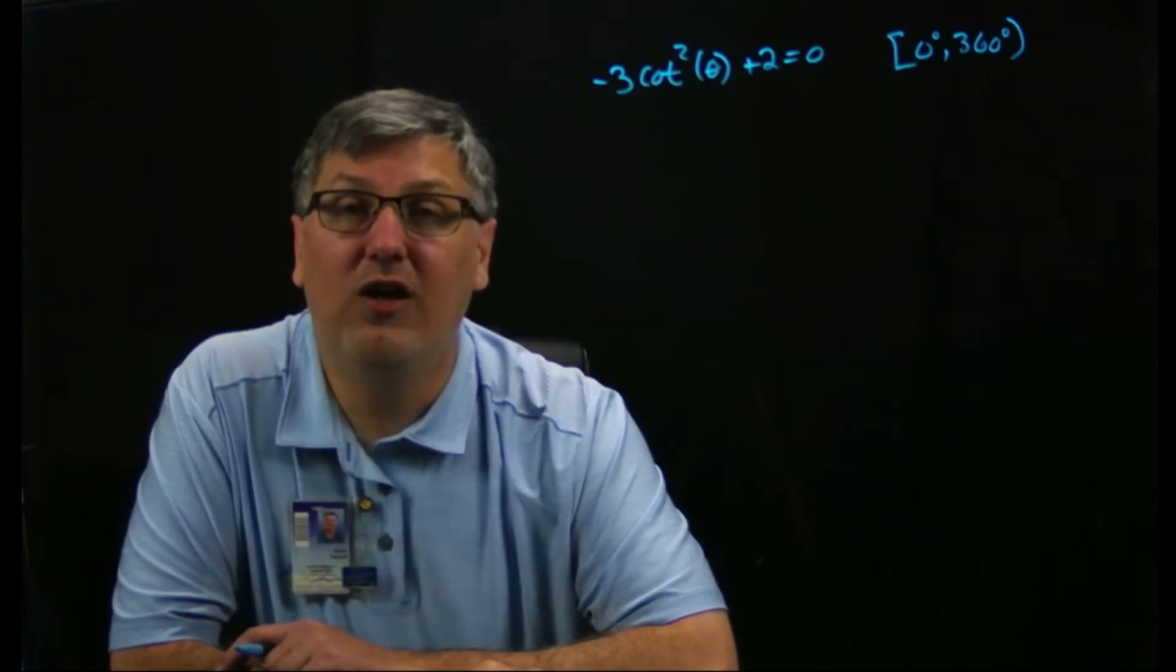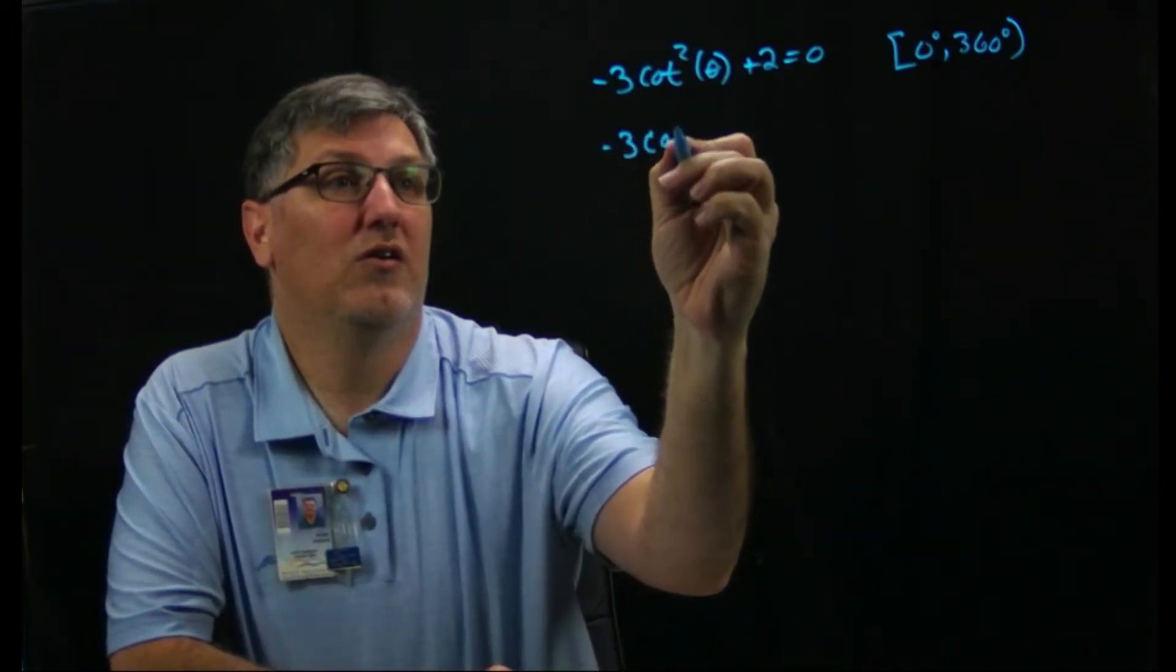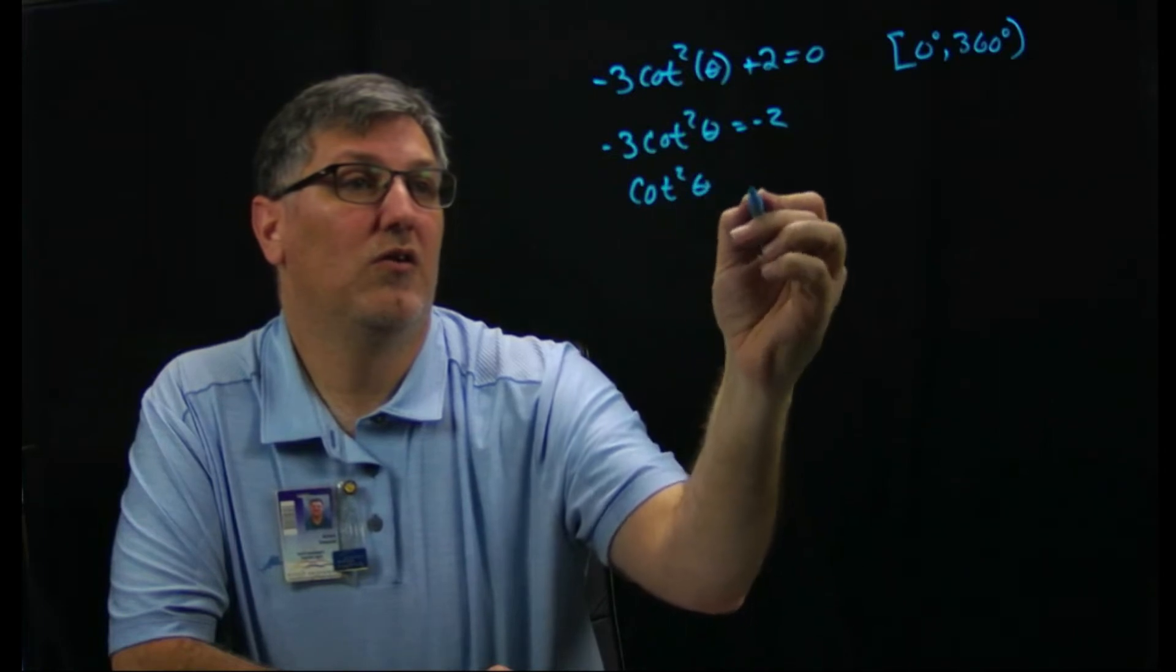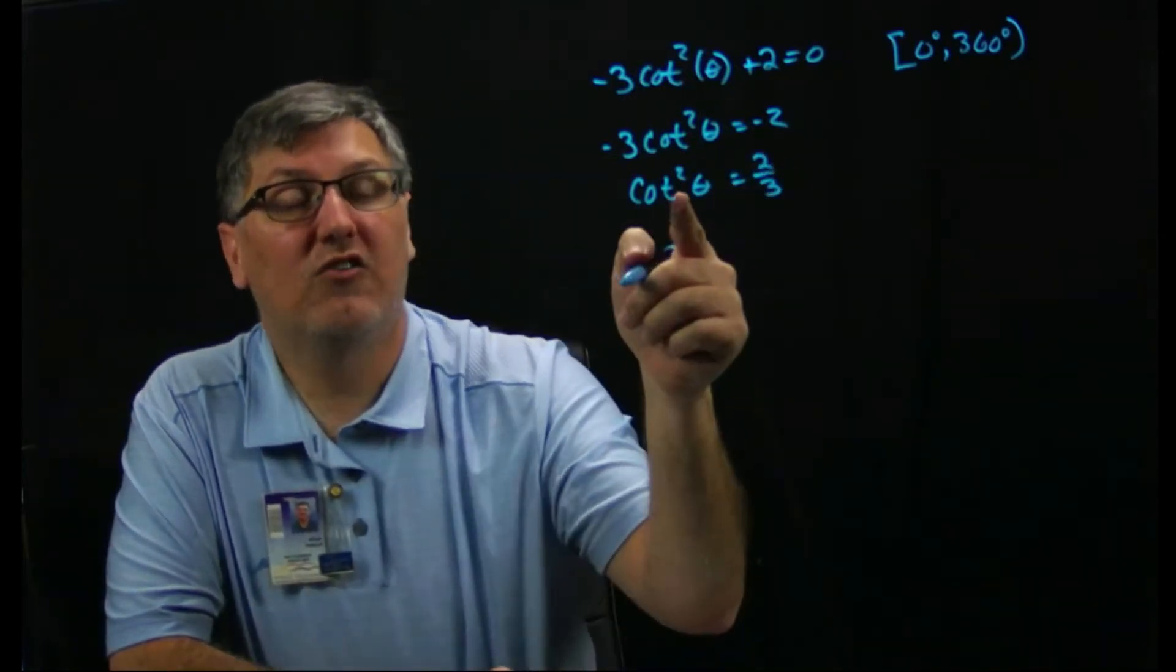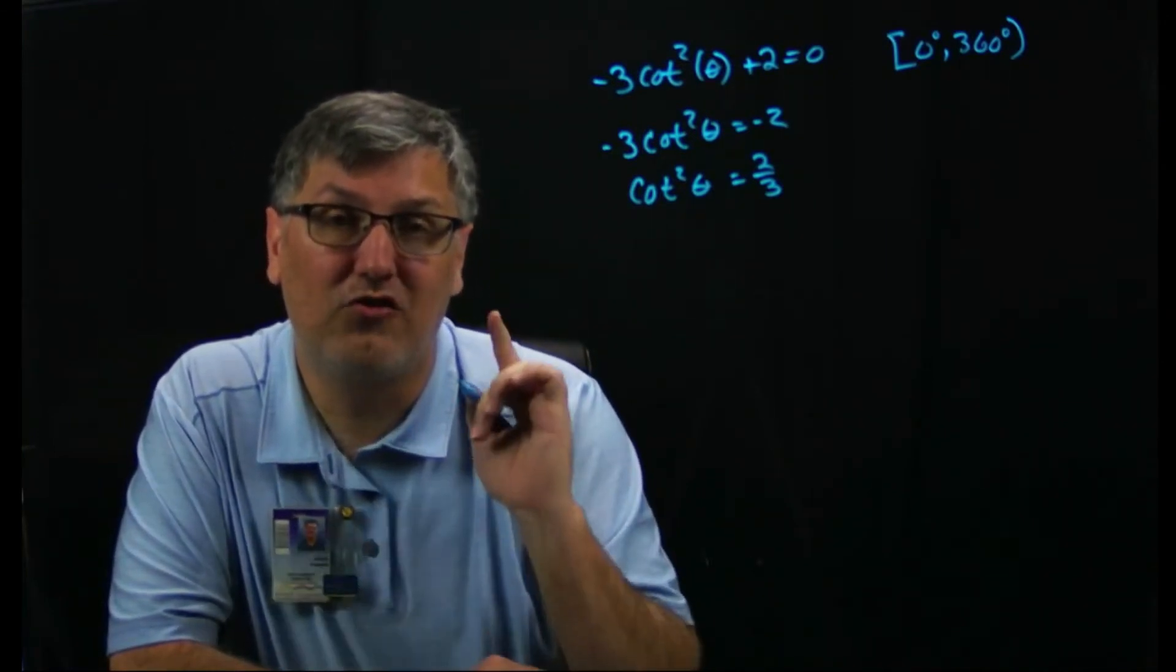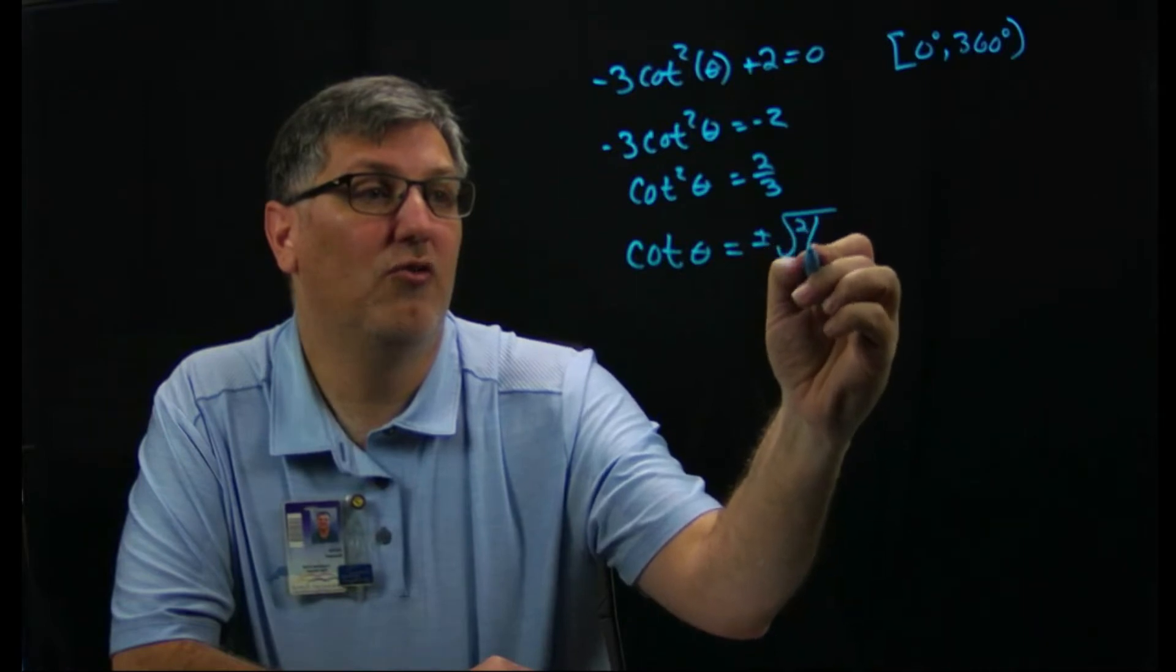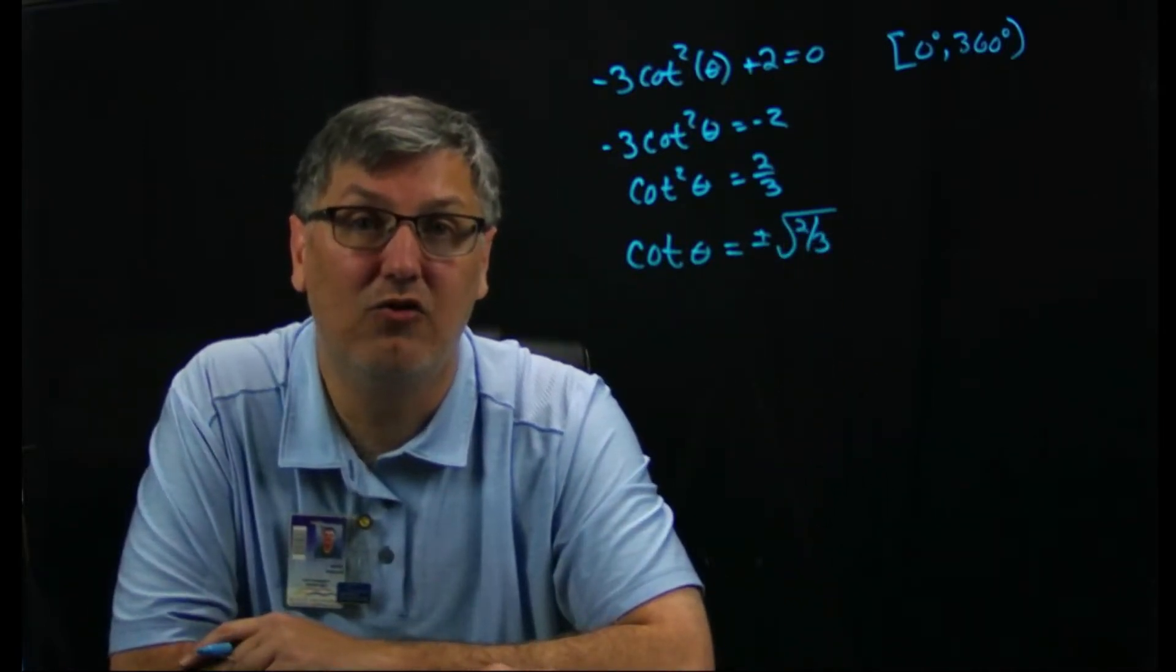All right, so my goal is to solve this to get cotangent by itself. So I'm going to subtract 2, I'm going to divide by negative 3. All right, now I want to take the square root. Every single time you take a square root you must put the plus or minus. So now I have cotangent of theta equals plus or minus the square root of 2 over 3.